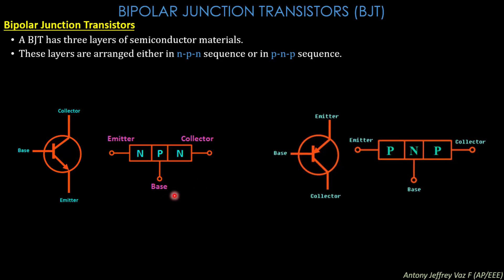In PNP junction transistors, the N junction is present at the center and the P junction is on both sides. These are the schematic symbol representations of the transistors. For the NPN transistor, the arrowhead from the emitter terminal is pointing outside. For the PNP transistor, the emitter arrow is in the inverse direction.